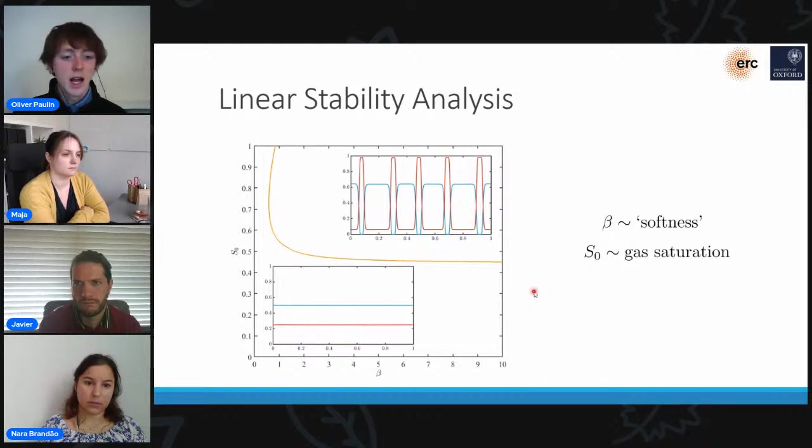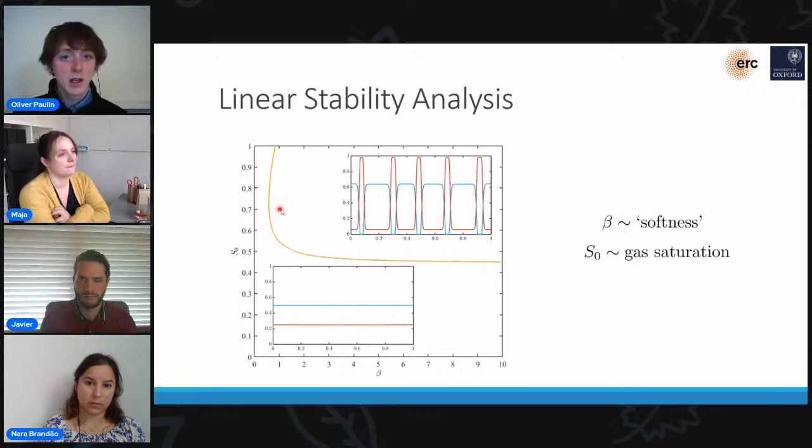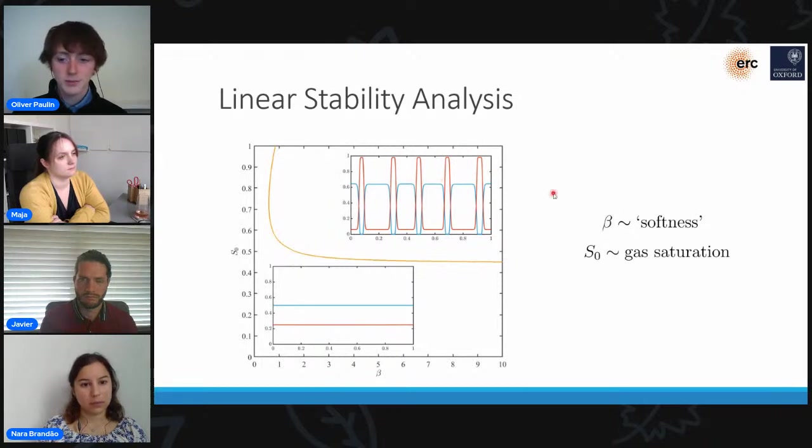So what you can see is if we were to have a system with a certain amount of gas in it, say a gas saturation of 0.7, and we consider a stiff porous material, initially it will be over here in our phase plane, and we'll be in the stable region. The gas will just remain within the pore space. If we were then to make the material softer and softer and softer, eventually we'll pass a critical value, at which point we'll pass into the unstable region of the phase plane, and then we'll have the spontaneous formation of these open cavities.